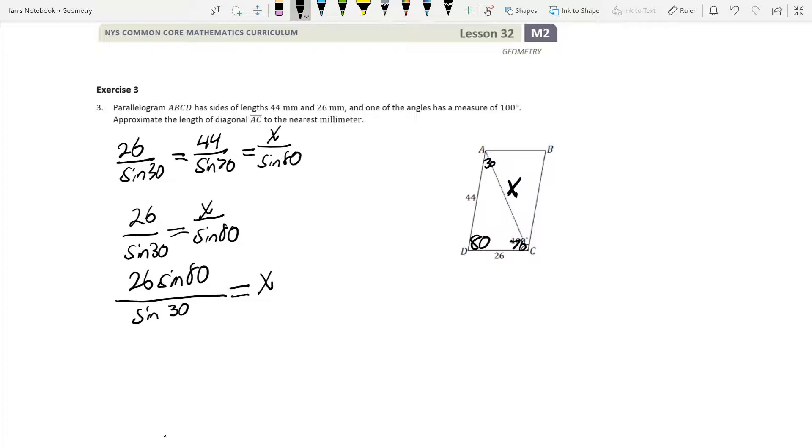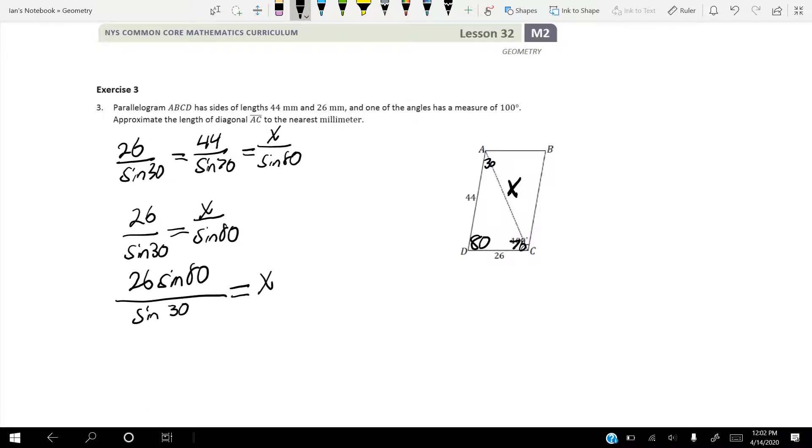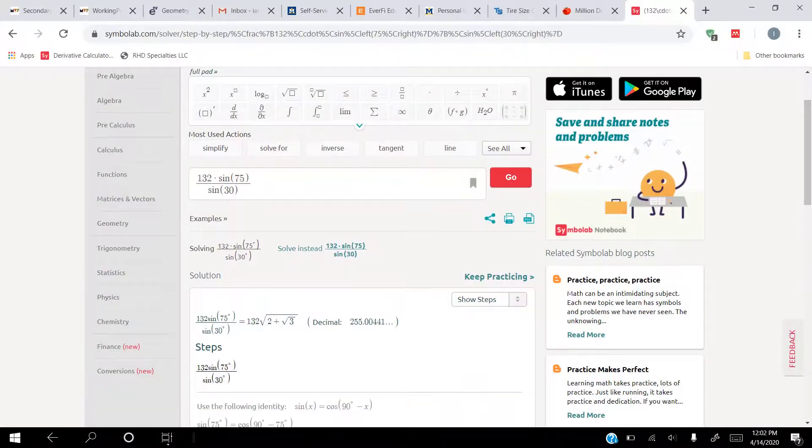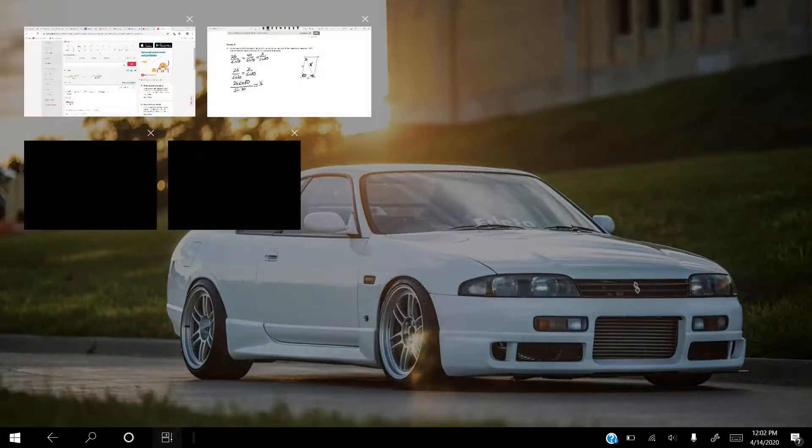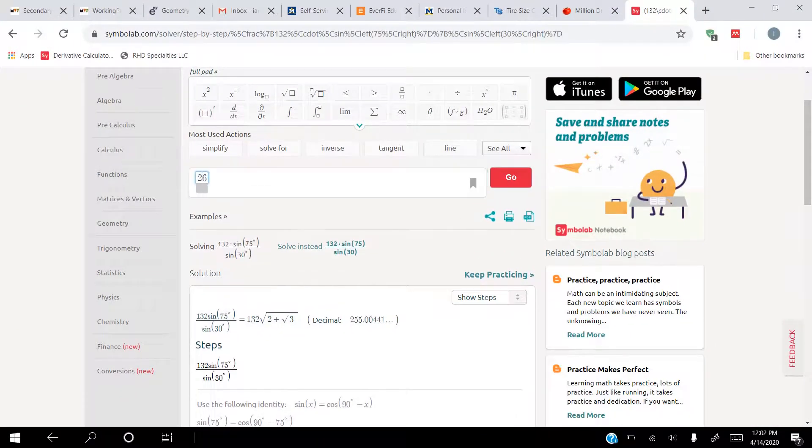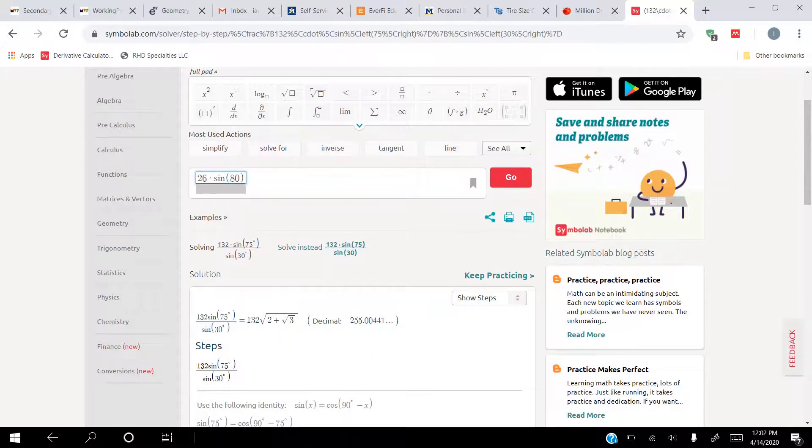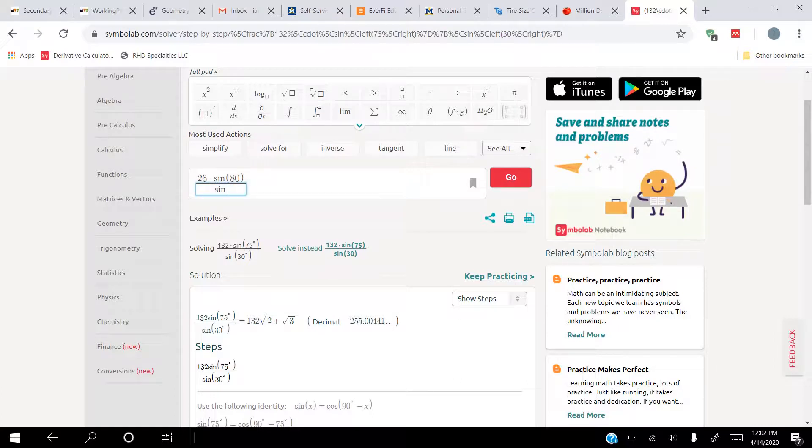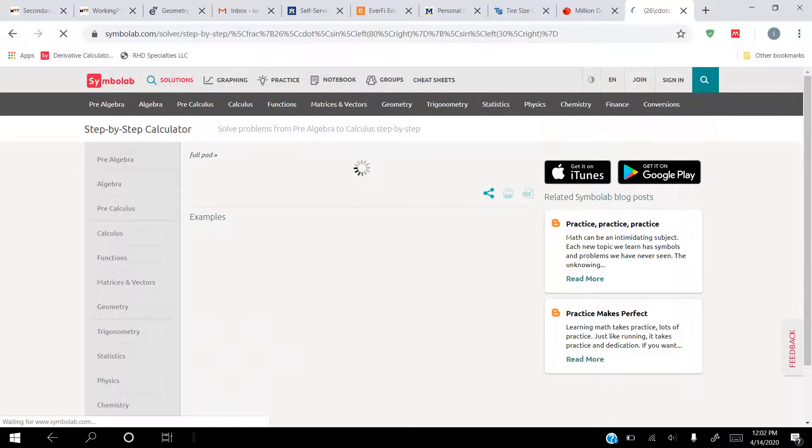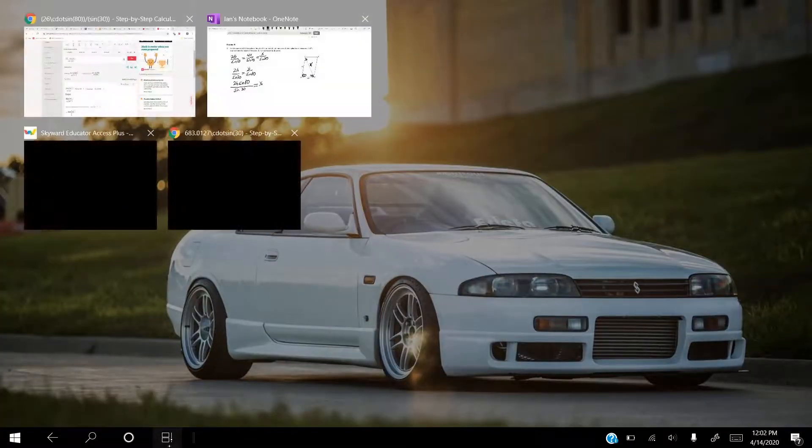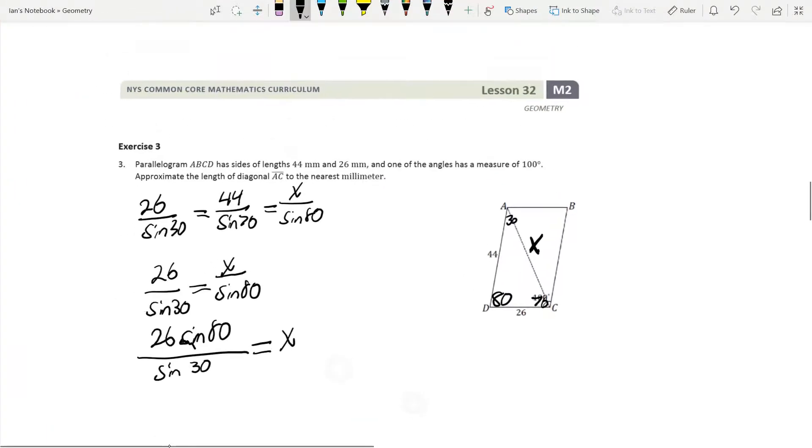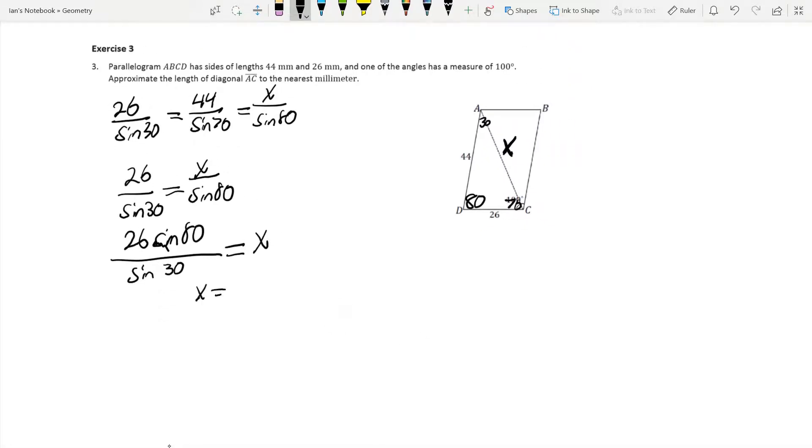All right, we're just going to keep rolling with this. So now we just plug this into our calculator, and it will give us the answer for X. So, we're going to say 26 sine 80. Make a fraction 26 times the sine of 80 divided by the sine of 30. Hit enter, which gives us 51.21. So we're going to say that X is equal to 51.21 millimeters.